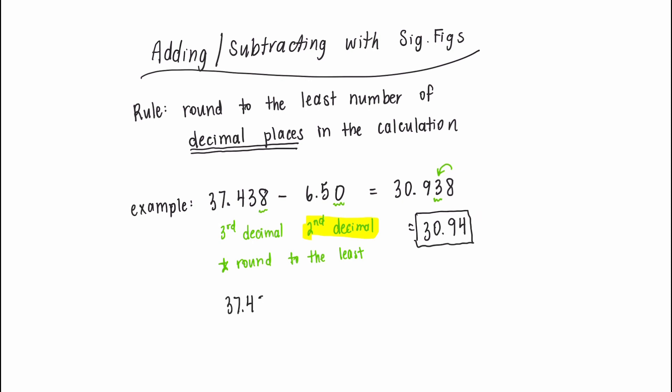Again, it might help to visualize these numbers stacked on top of each other, so we can see how the decimal places line up. We know the second decimal place for both of our values, but in the third decimal place, one of our values has a big question mark, so we don't actually know what that number is, and we're only going to report the decimal places that are known. In this example, that's the second decimal and higher.